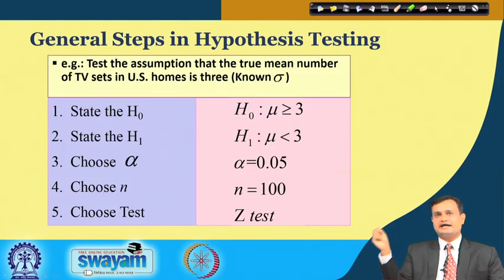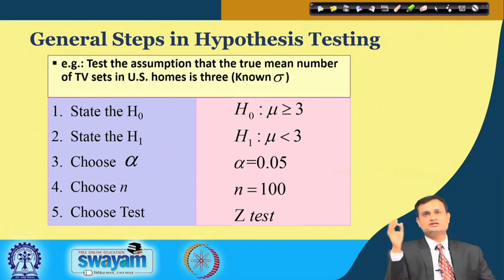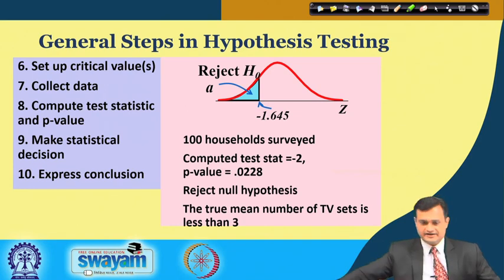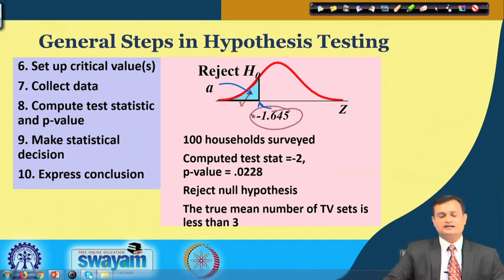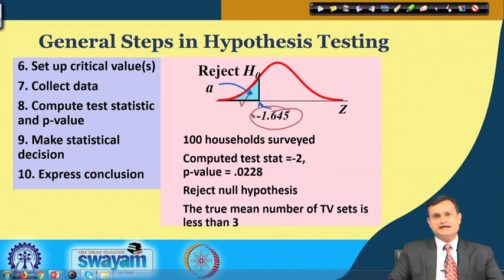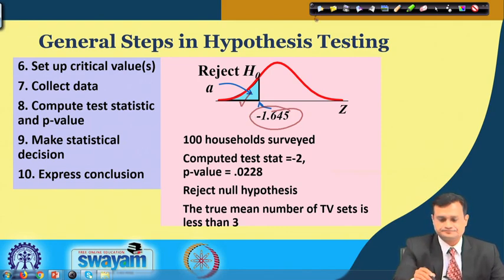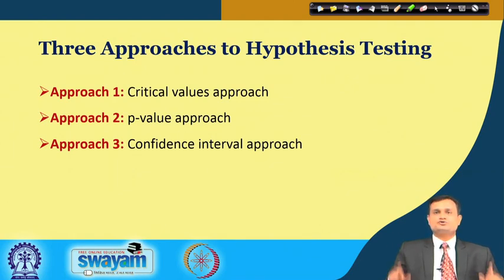The general steps in hypothesis testing are: (1) state H₀, (2) state H₁, (3) choose α, (4) choose n, (5) choose the test (e.g., Z-test), (6) determine the critical region based on the critical value from tables, (7) compute the test statistic and p-value, (8) make the statistical decision whether to accept or reject the null hypothesis.